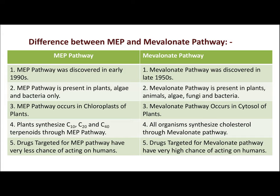Drugs targeted for the MEP pathway have very little chance of acting on humans, since the MEP pathway does not exist in humans — so those drugs will only act on the enzymes of the MEP pathway in pathogens. Drugs targeted for the mevalonate pathway have a very high chance of acting on humans. One famous example is the statin class of drugs, such as rosuvastatin and simvastatin, which target the enzyme HMG-CoA reductase in the mevalonate pathway.